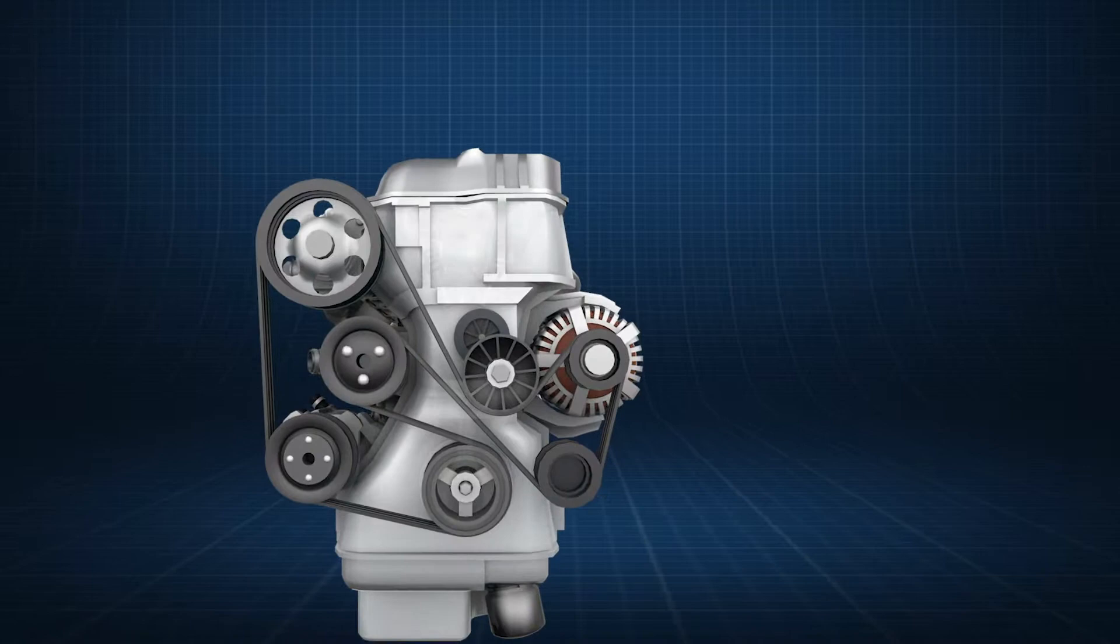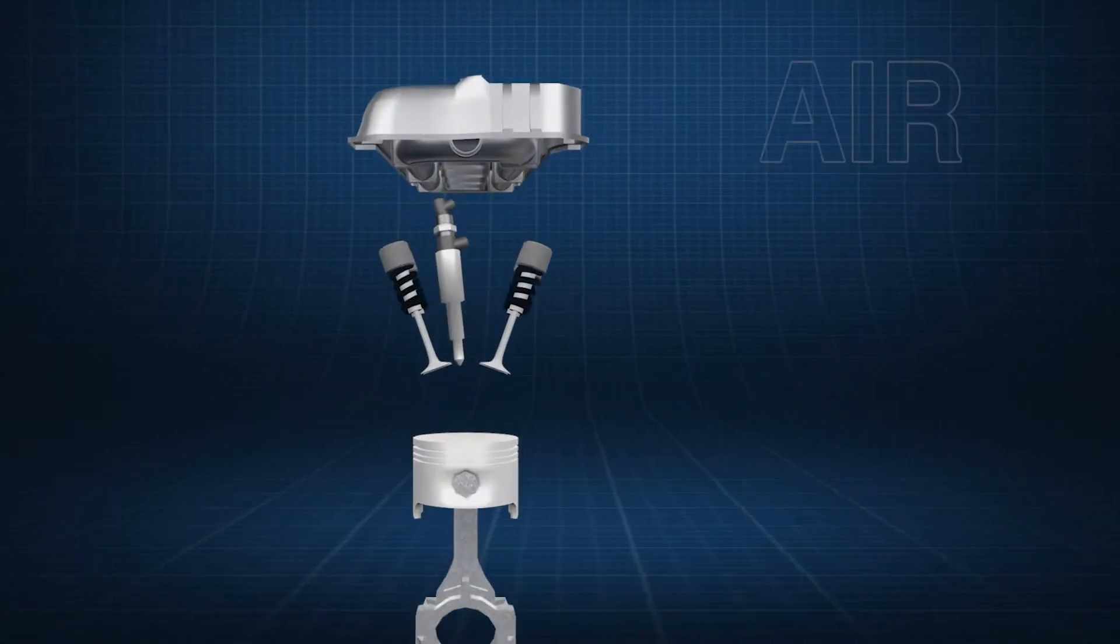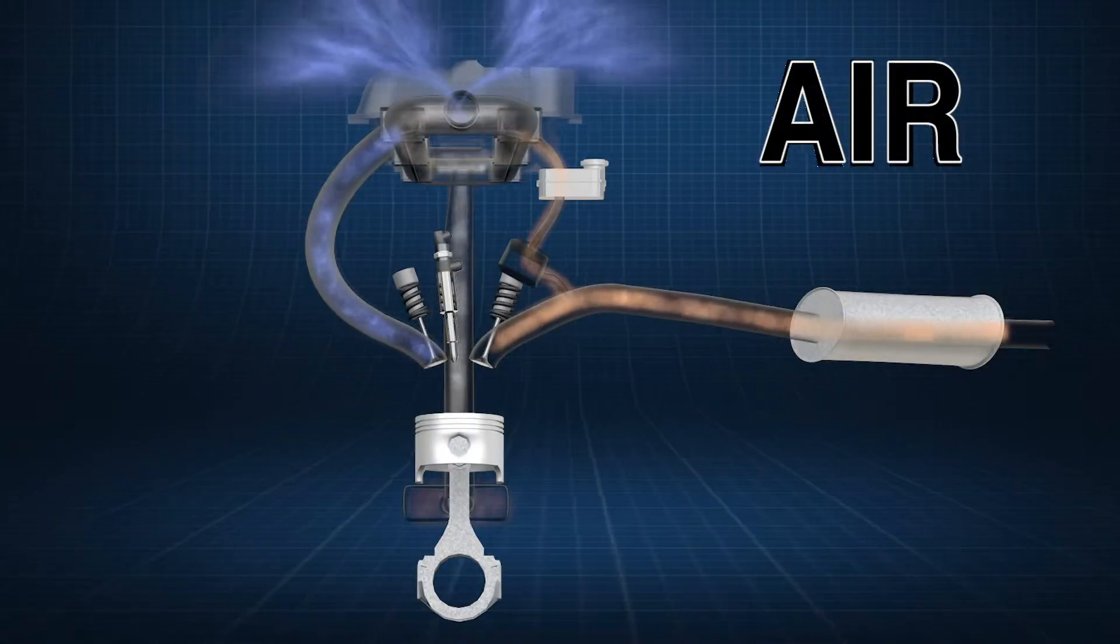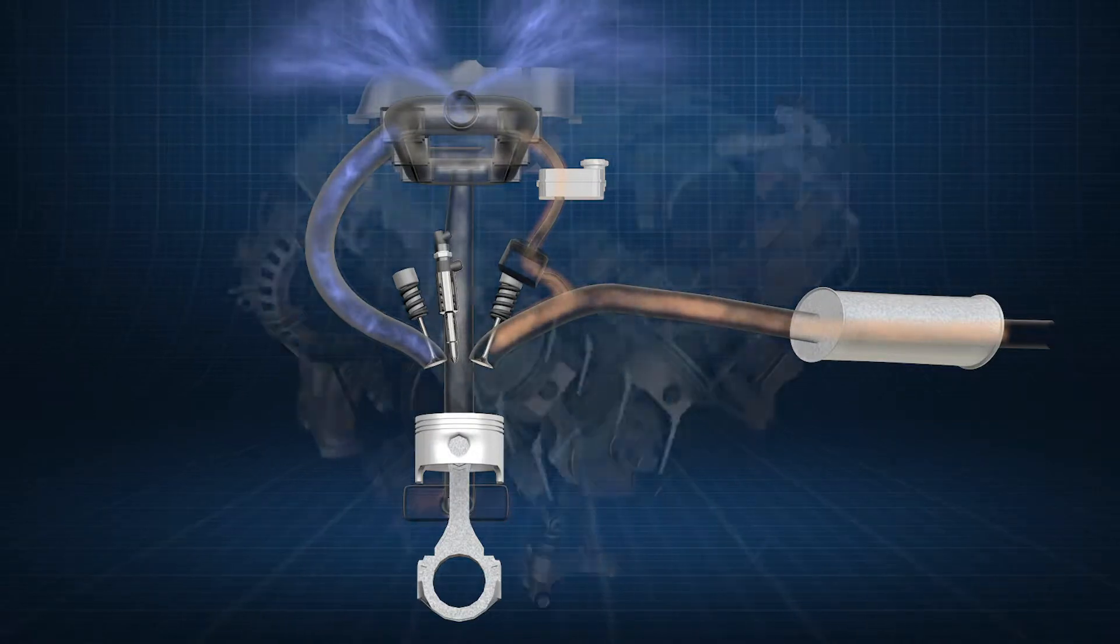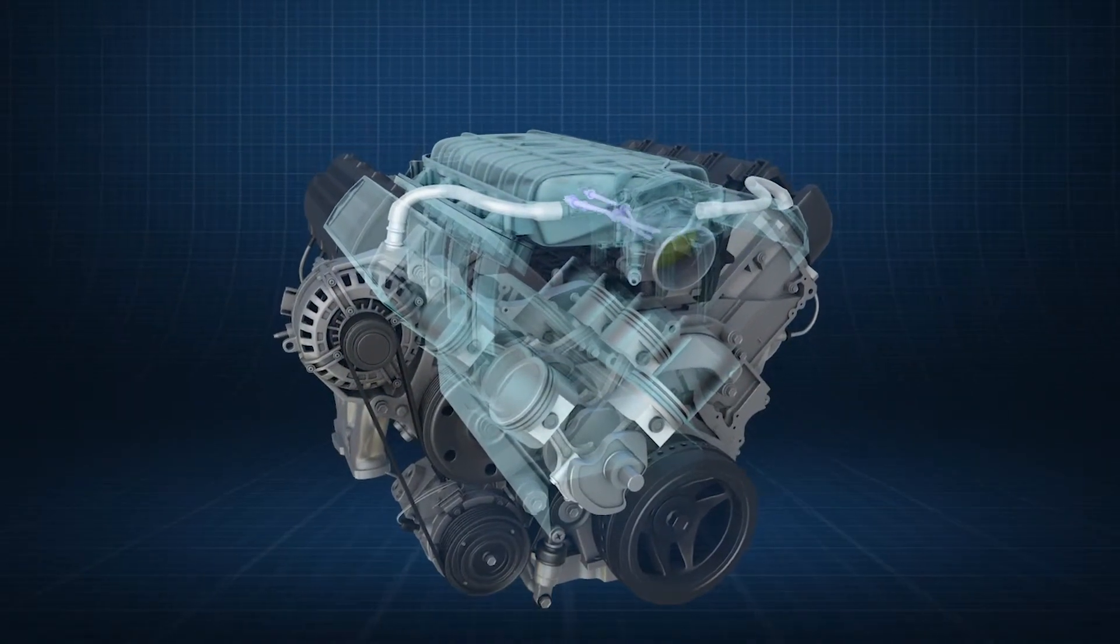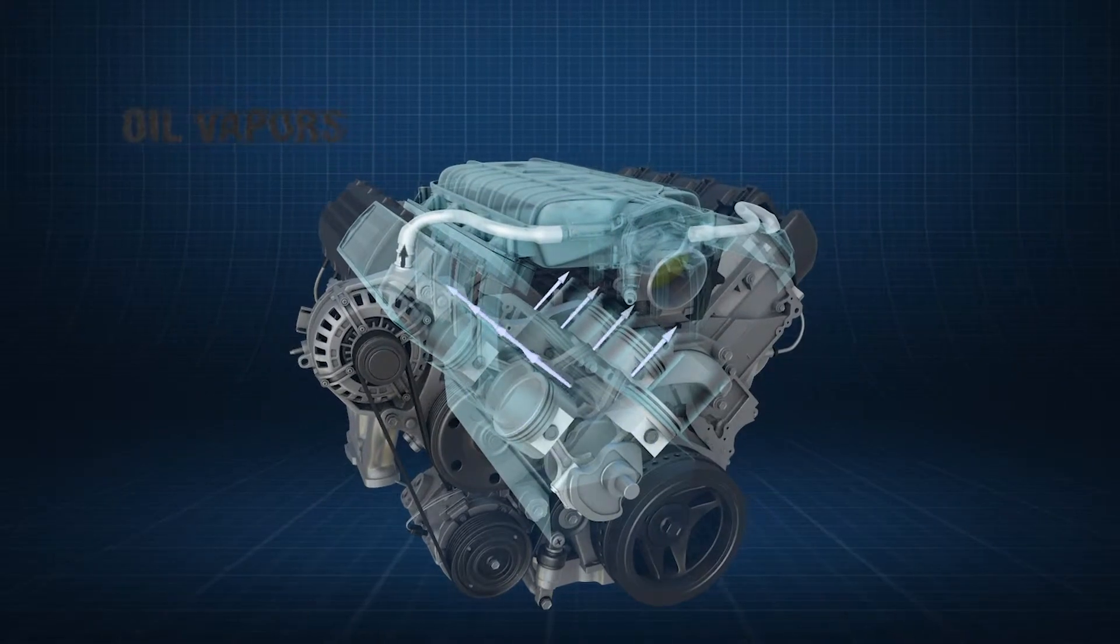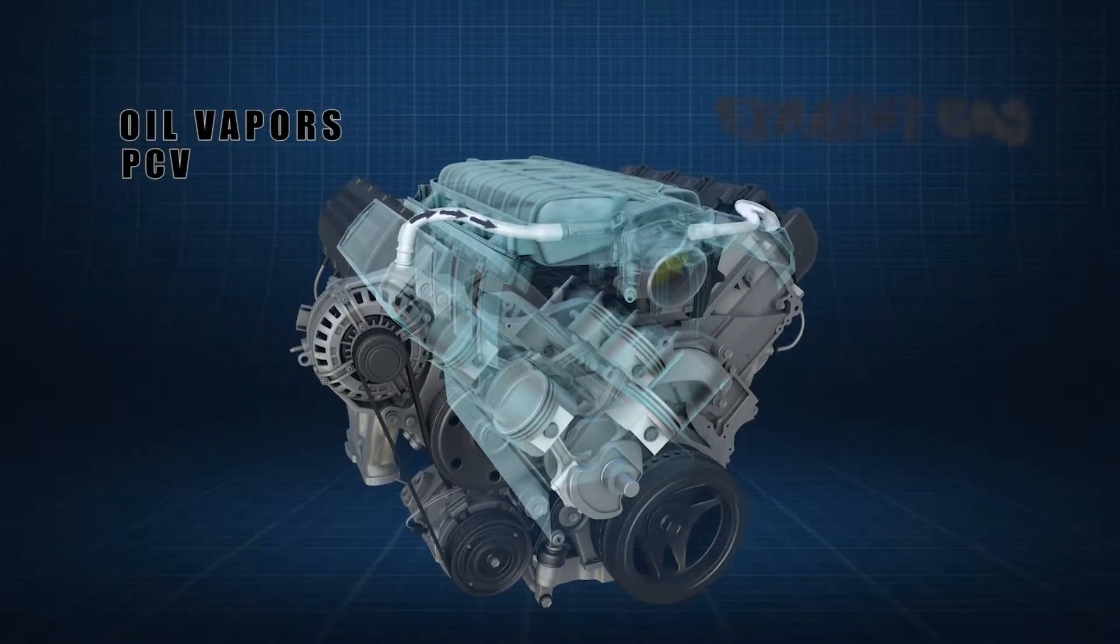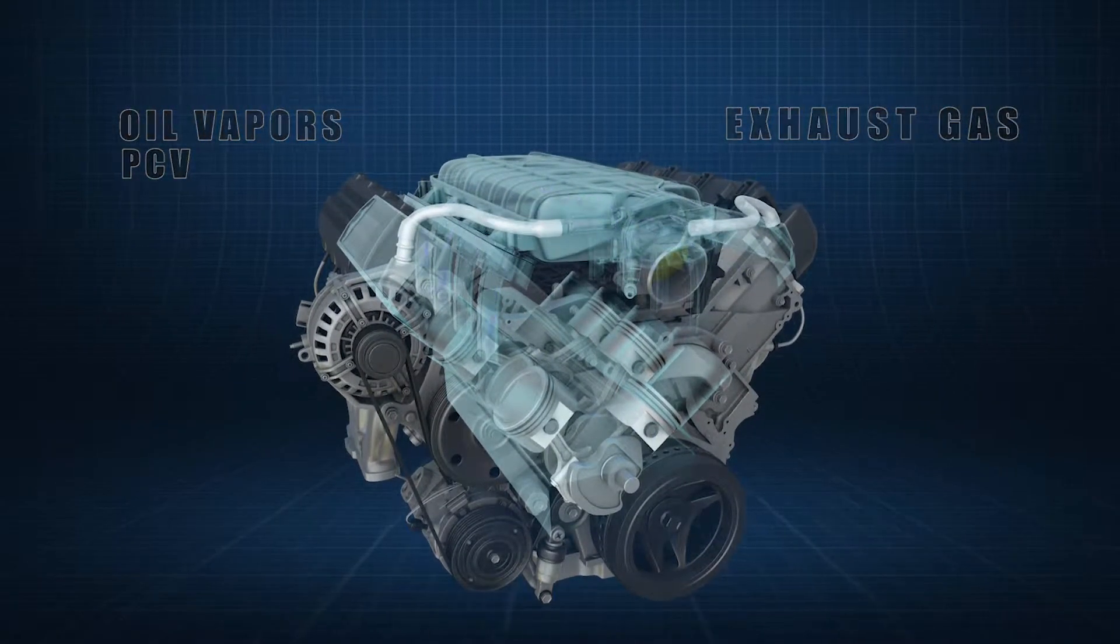The main purpose of the air induction system is to be the lungs of the engine and provide the exact amount of air to the combustion process. Air induction is also affected by the emission control system's recirculation of gases including oil vapors from the PCV valve and exhaust gas.